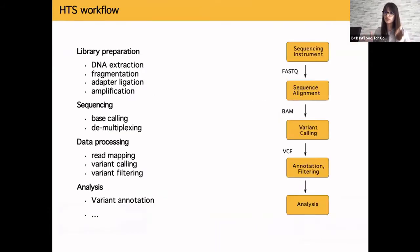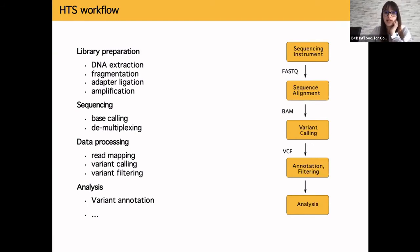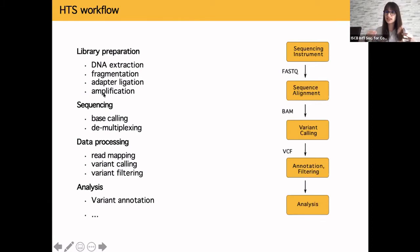To recap what we covered yesterday: this is a well-established workflow for generating variants from next generation sequencing data. We have a sequencing instrument, and before putting DNA in, we do library preparation steps — DNA extraction, fragmentation, adapter ligation, and amplification in the tile — which is interpreted by the sequencing instrument via fluorescence and optical detection, giving us a FASTQ file.